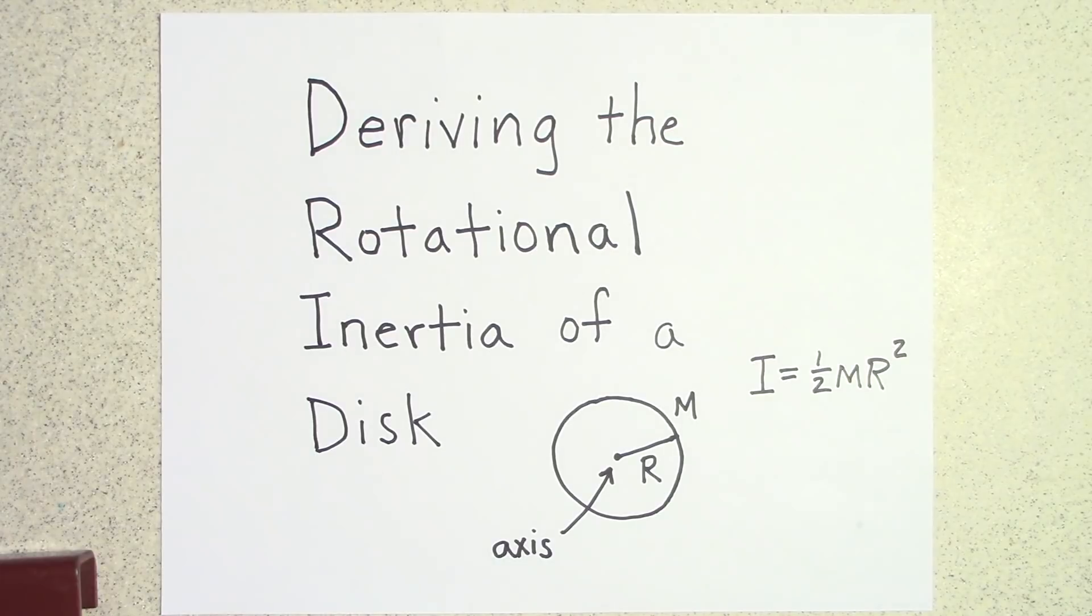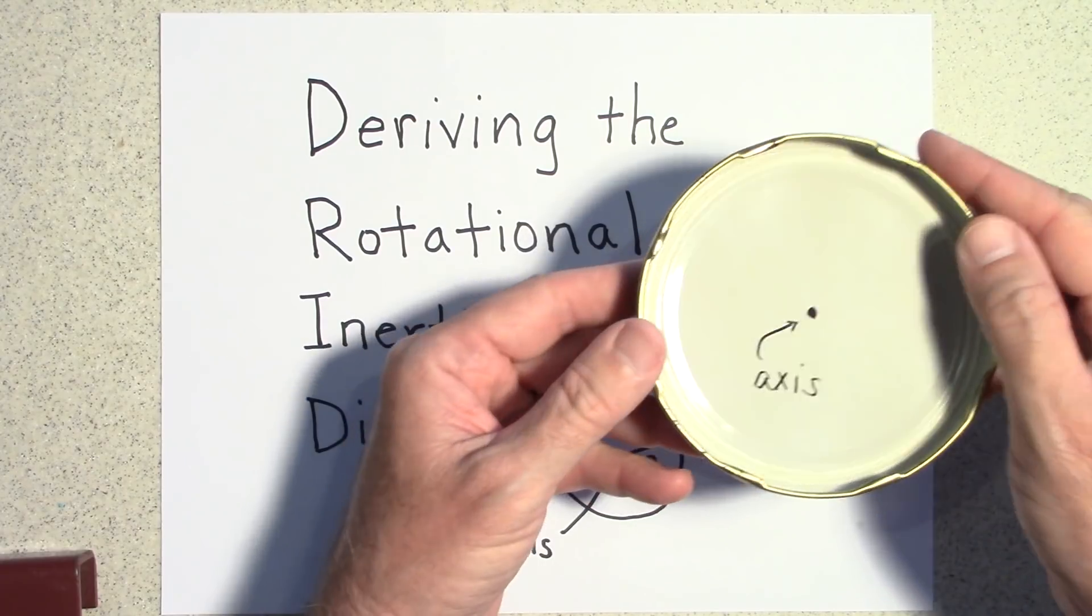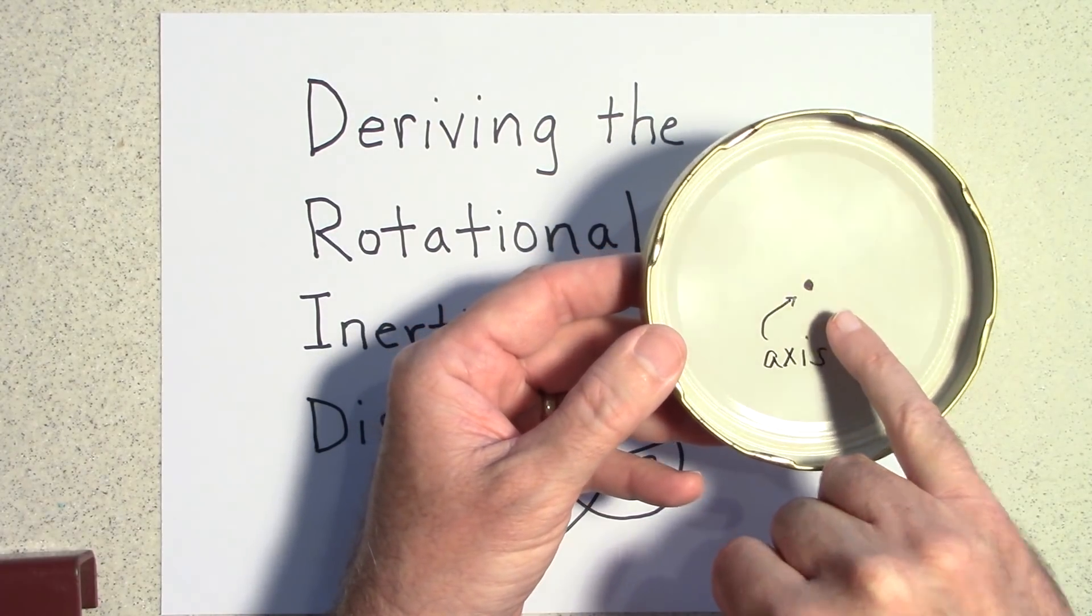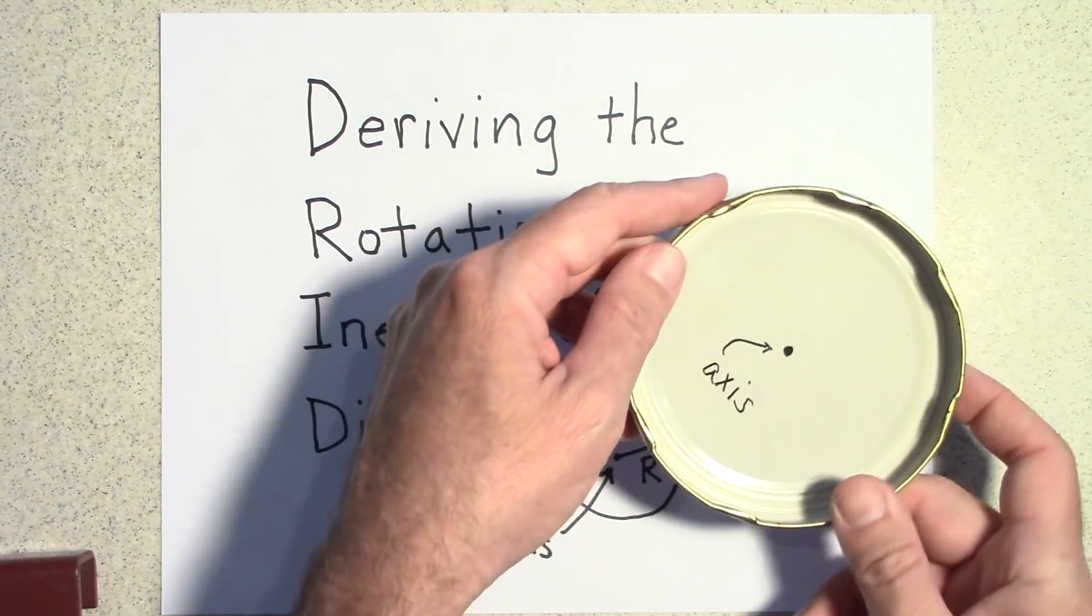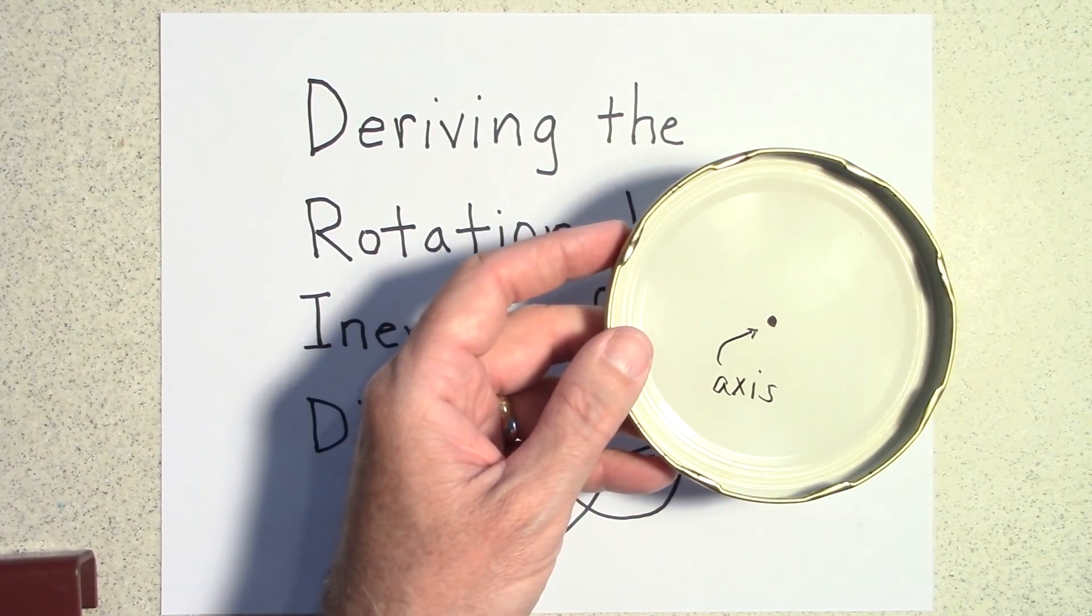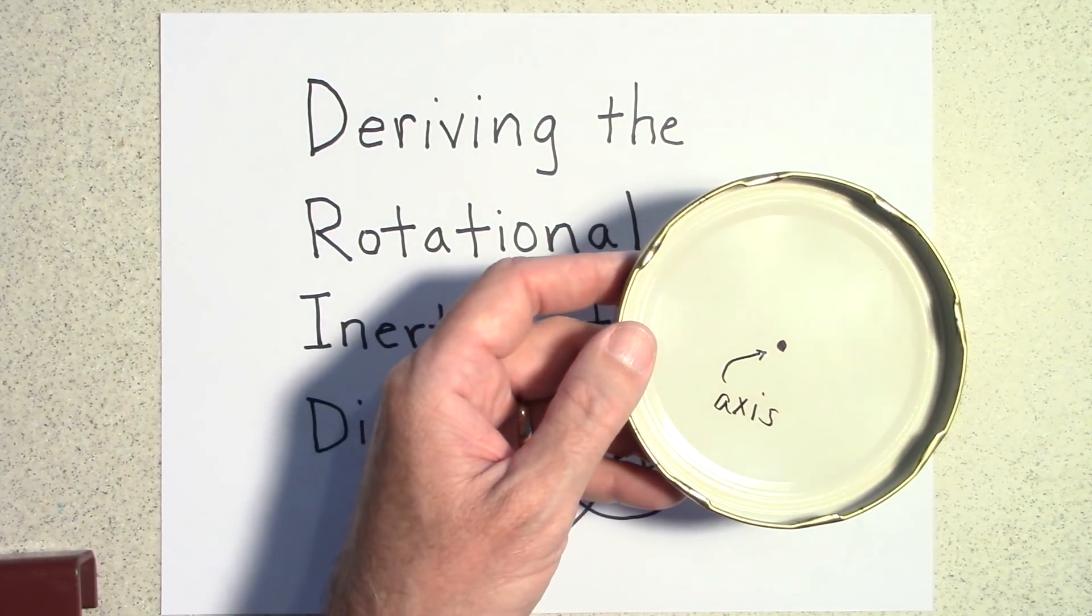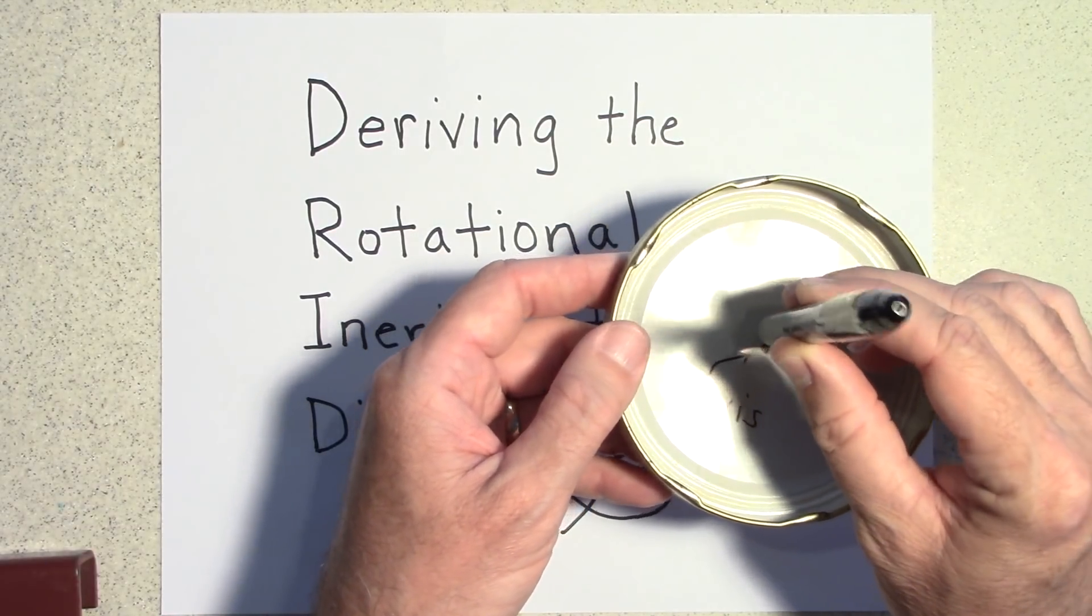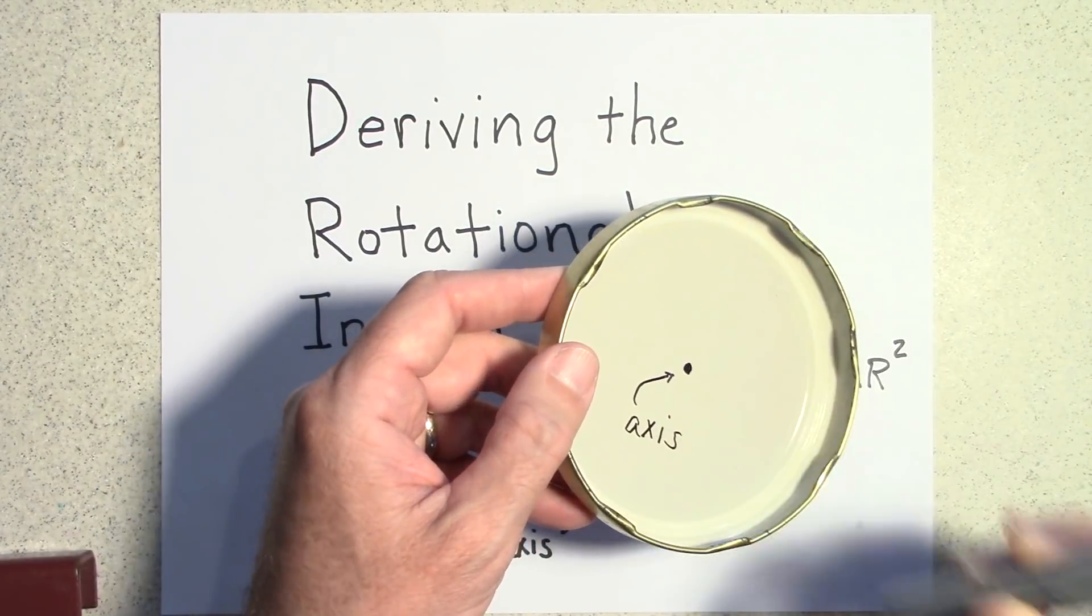So if this is the disc that you're talking about and there's the axis right there, then we're deriving how sluggish this is to rotate about that axis. Not about this axis or any other crazy axis, just this axis right here that axis like my pen would be the axis.